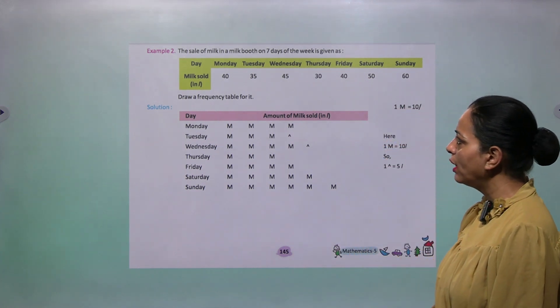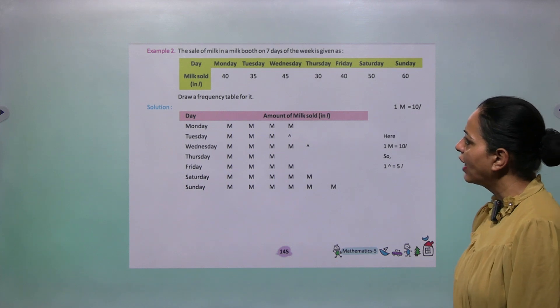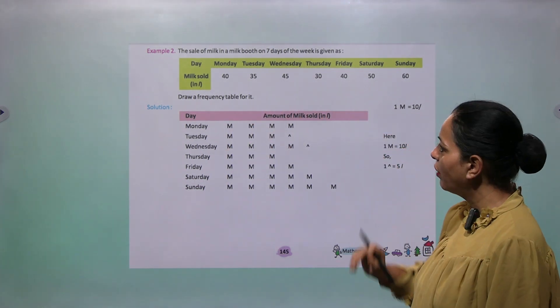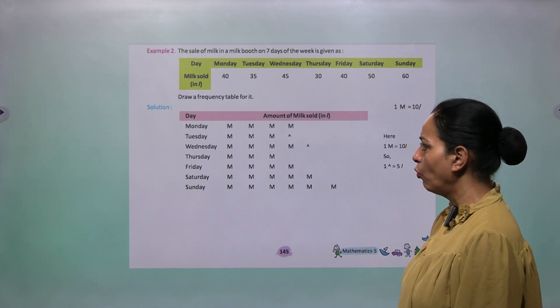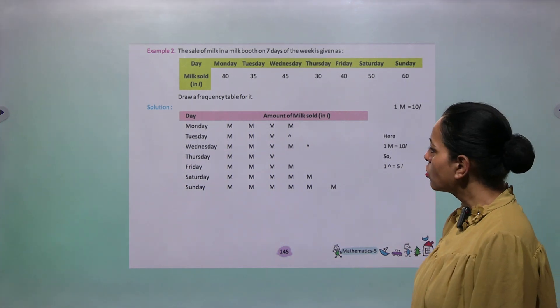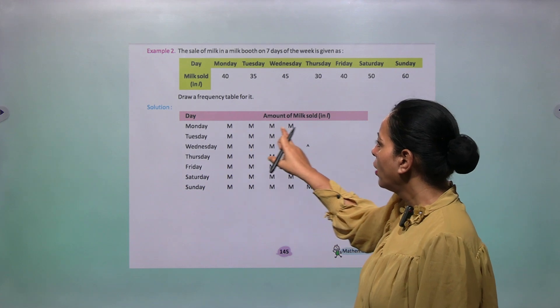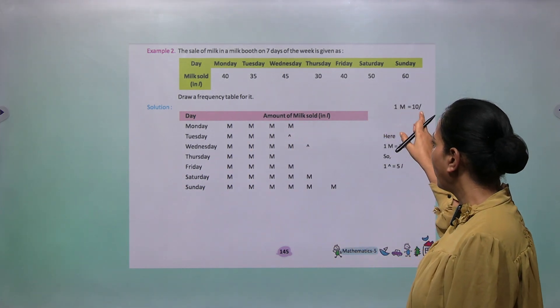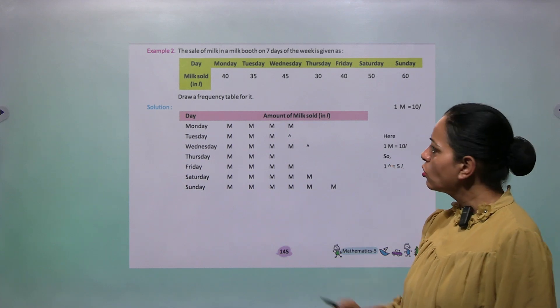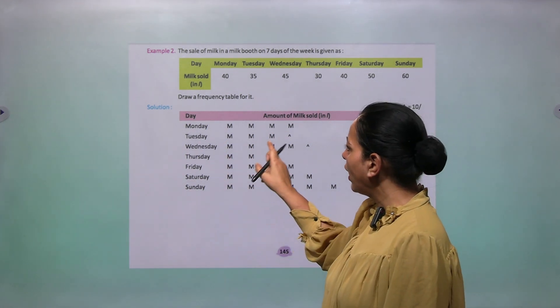Example 2: The sale of milk in a milk booth for seven days of the week is given. Day is given and milk sold in liters is given. Draw a frequency table for it. Days in one column and then amount of milk sold in liter. What they have done: Monday 40, so M means 10 liters and this means 5 liters. So 40 means 4M. Tuesday 35, so 3M and one 5 sign.